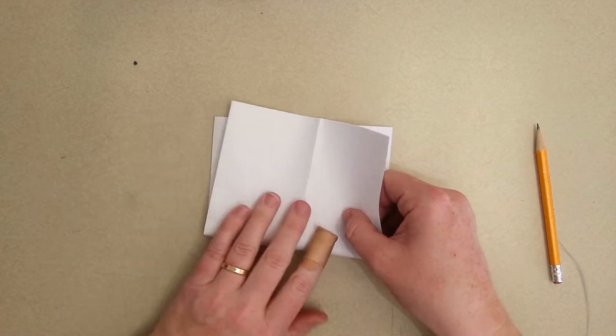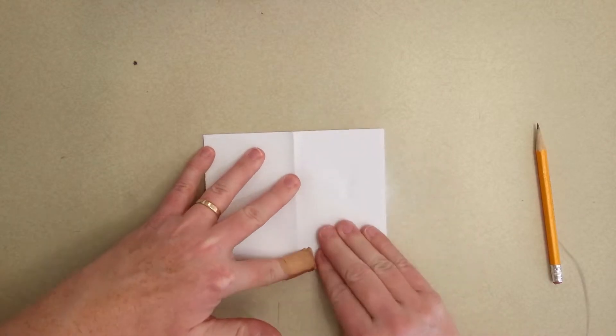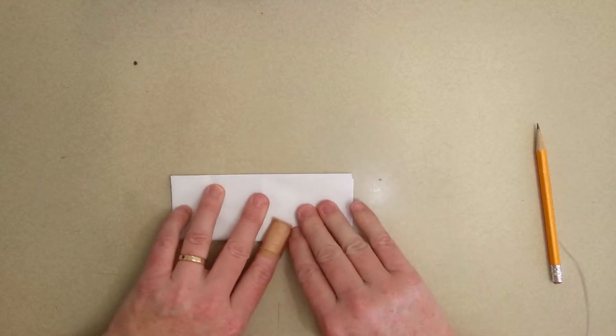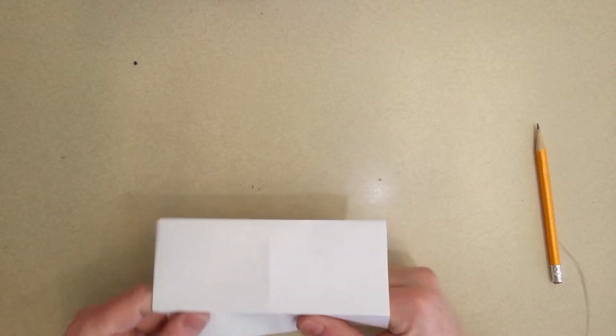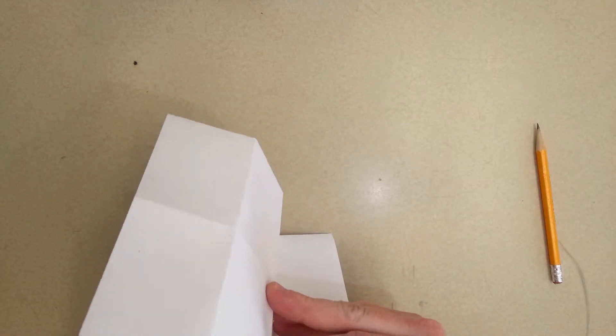Open it up like that. Fold it in half the other way, and then fold it one more time. So you end up with 16 squares.